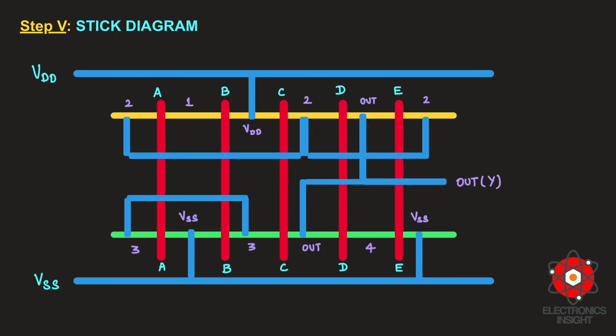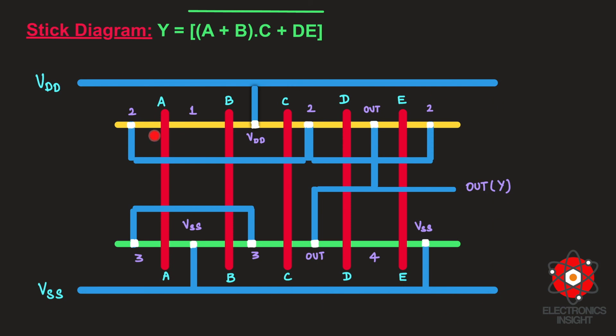Once all output and input layers are connected using blue metal layers, the last design rule is to place a contact cut wherever two different layers are connected together. I place contact cuts at all such points — note that with a black background I use white contact cuts, but the standard rule requires black contact cuts. After placing all contact cuts, this is the final stick diagram for the logic expression Y = A + B·C + D·E.